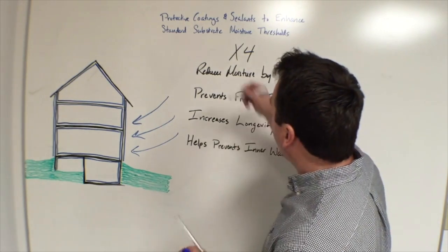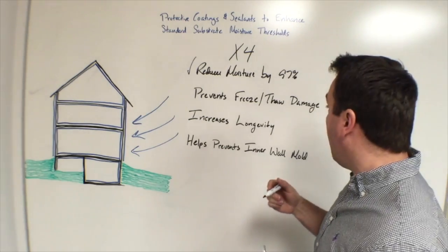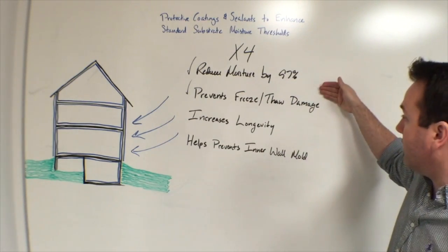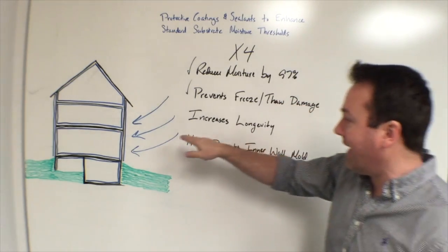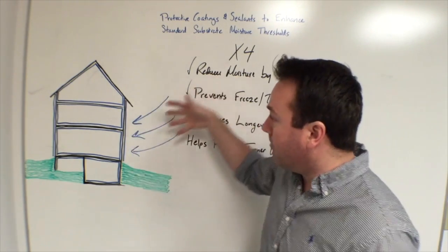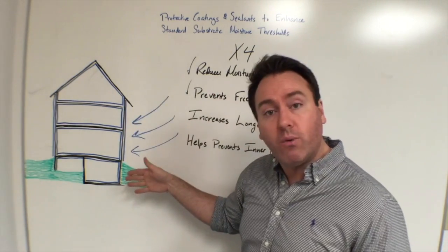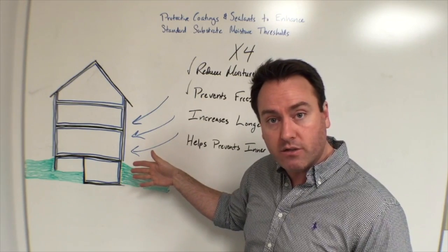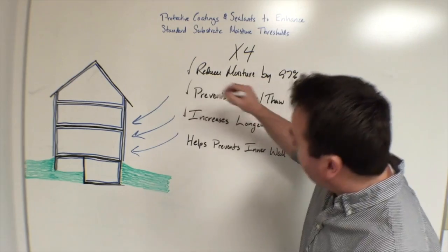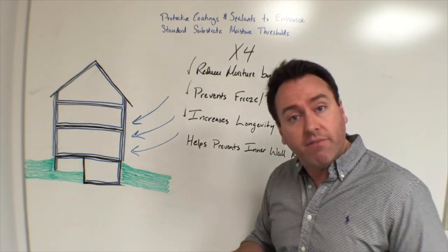So let's just kind of go one by one here, reduces moisture by 97%, prevents freeze-thaw damage. And when you're talking about preventing freeze-thaw damage, of course you're talking about increasing the longevity of these materials. If the moisture can't get trapped in these materials to begin with, then of course we're going to extend the service life of these materials as well. So we've got another benefit for increasing the value of a property over time as well, or sustaining the value over time.